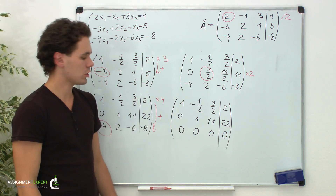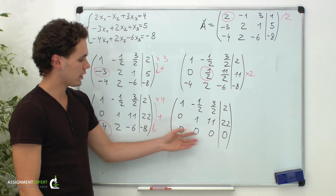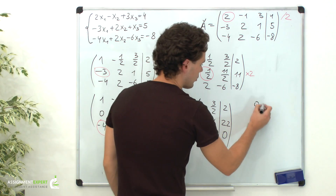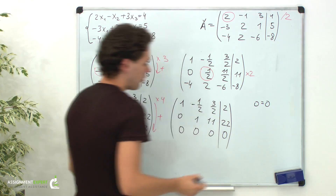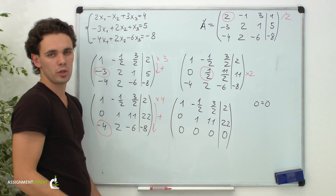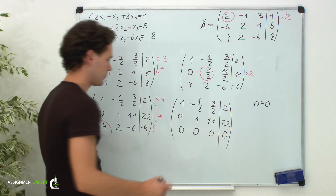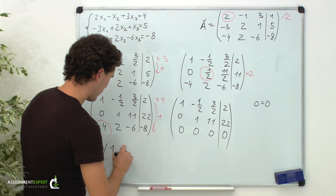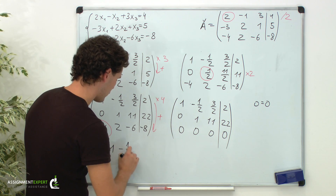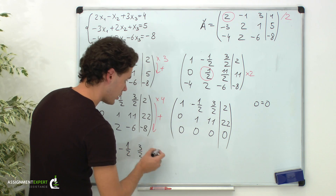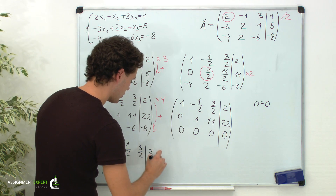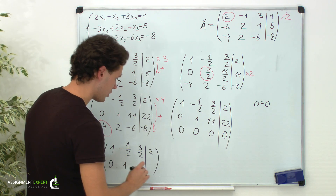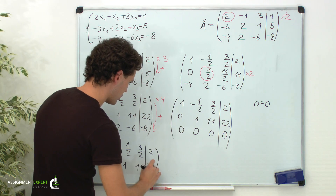Now let's have a closer look at the matrix we obtained. In the third row, we have all 0s, so this is actually the equation 0 equals 0. Our system degenerates into a system with 2 equations and 3 unknowns. As a matrix, it looks like this: in the first row we have 1, negative 1 half, 3 halves, and 2; and in the second row, 0, 1, 11, and 22.